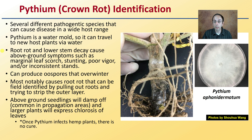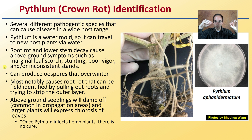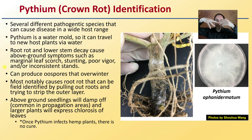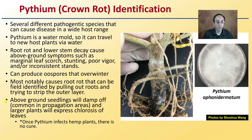Pythium can produce O spores that can overwinter, which can be an issue if you're planning to plant in that same field the following year. Most notably, it causes root rots that can be field identified by pulling out the roots and trying to strip the outer layer. If that outer layer comes off really easily, that can be a sign you may have pythium. Above-ground seedlings can damp off, which is common in propagation areas, and larger plants will express chlorosis of leaves.